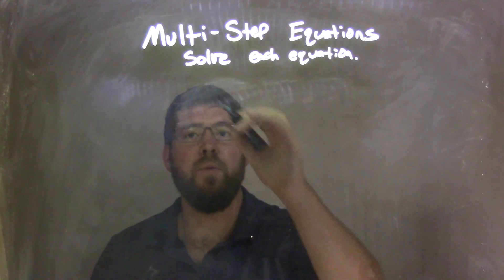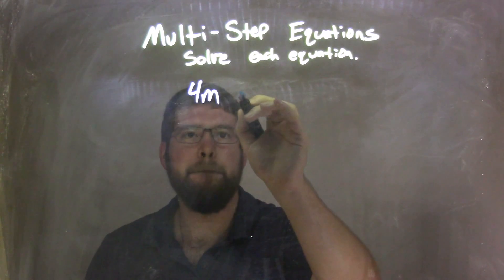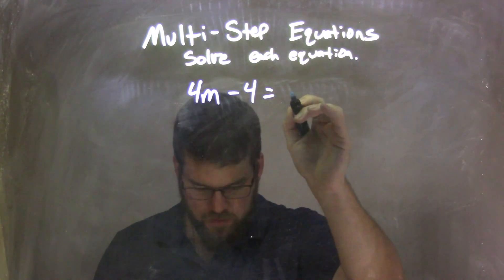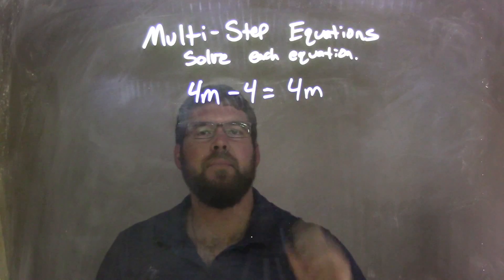So if I was given this equation here, 4m minus 4 equals 4m, okay?